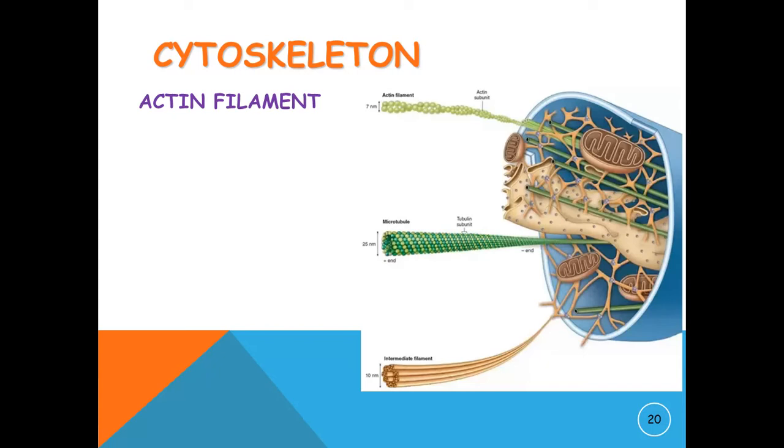Actin filaments are linear polymers of globular actin subunits and occur as microfilaments in the cytoskeleton and as thin filaments. Microtubules are polymers of tubulin that form part of the cytoskeleton and provide structure and shape to eukaryotic cells.